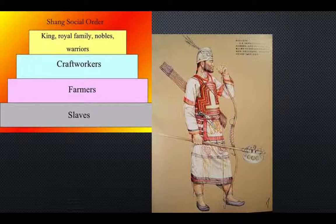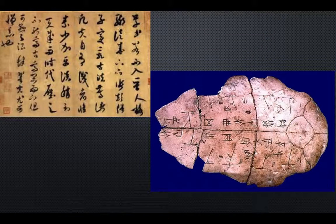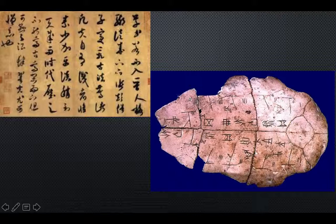The Shang developed China's first writing system, which had symbols that represent words and sounds, with more than 2,000 symbols in the system. Writing was found on bones and turtle shells, which suggested oracles — predictions being made. They would write on a bone or shell, heat it up, and depending on how it cracked, that would tell them what was going to happen in the future.